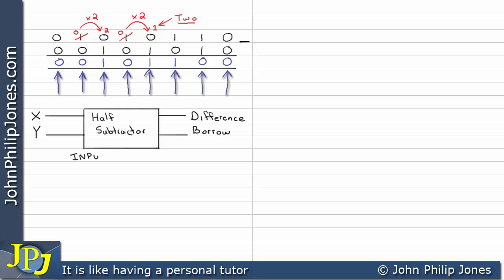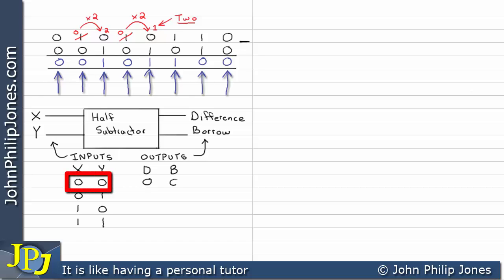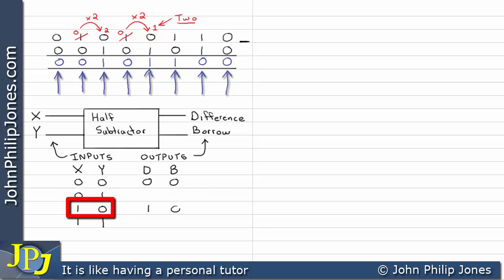We're going to consider the inputs to this half subtractor — x and y — and produce a truth table, writing down all the possible combinations we can have for x and y. We need to consider the outputs, which are going to be the difference and the borrow, written as d for difference and b for borrow. If x is 0 and y is 0, then the difference is 0 and there was no need to do any borrowing, so we put 0 under b. Coming down to 1 minus 0, that's a difference of 1 and we didn't have to borrow.